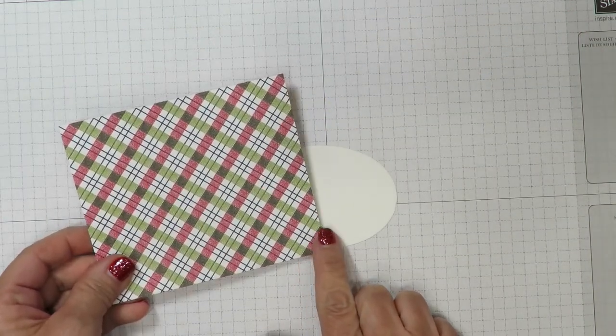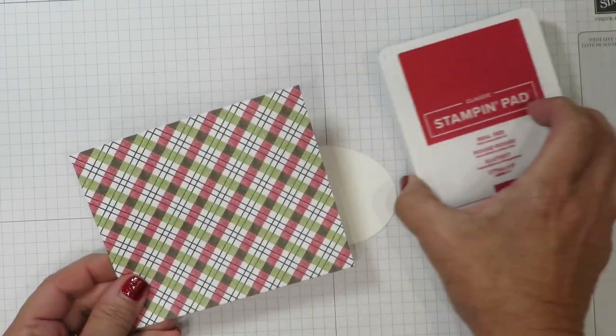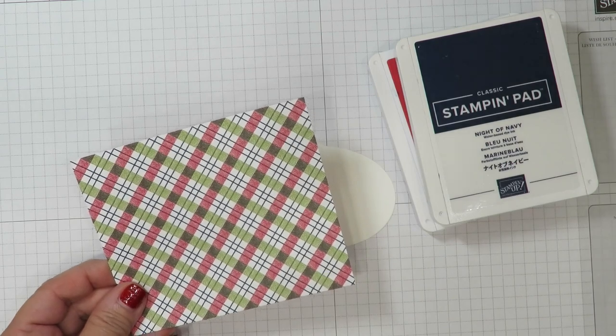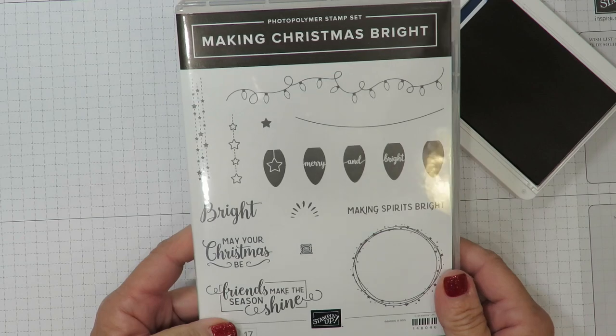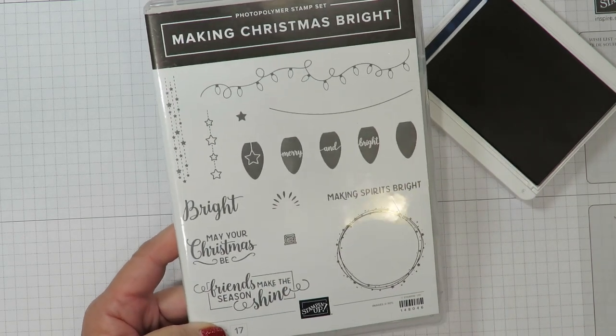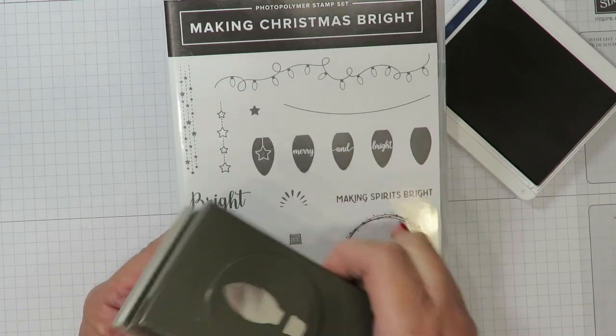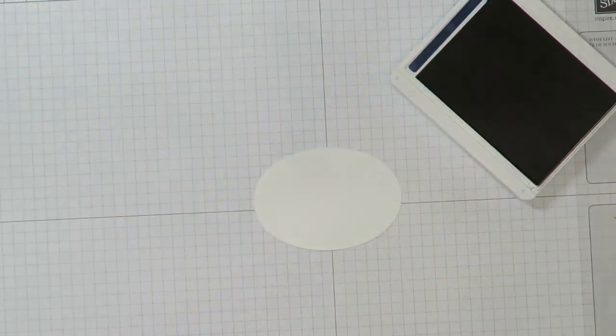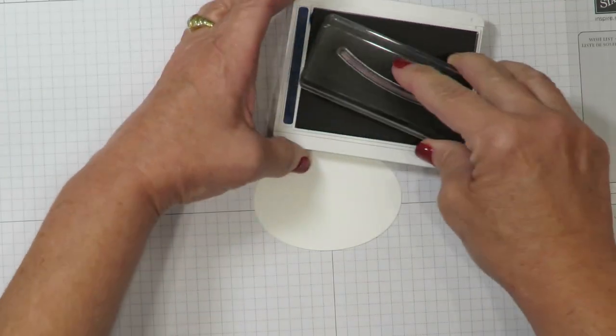To coordinate with the designer series paper, I brought in those same ink pads so I'm going to be using Real Red, Night of Navy, and Old Olive using the Making Christmas Bright stamp set. Isn't this fun? The great thing about this is it has a coordinating light bulb punch. It's going to make it a lot easier than having to fussy cut these images. From that stamp set I've pulled out this curved line which is what my light bulbs are going to hang on.